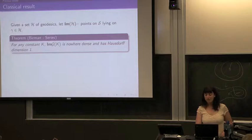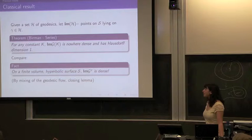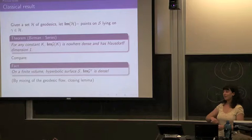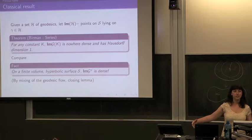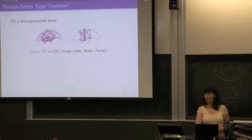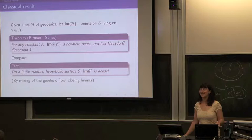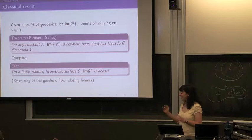Compare this to the fact that if your surface has finite volume, then closed geodesics are dense on your surface — by mixing of the geodesic flow, you can approximate any complete geodesic on a closed surface by closed geodesics. Here's a picture on a one-holed torus: on one side we have the first ~100 closed geodesics on a one-holed torus, and you can see they're going everywhere. On the other side we have the same number of simple closed geodesics, and you can see they form a very thin set.